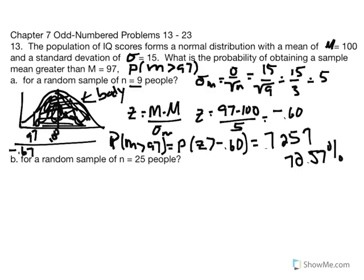Similarly, the next one is for a sample equal to 25. The probability statement is the same: probability of obtaining a sample mean greater than 97, but the sample size has changed. We should consider the effects of that increase in sample size on the z-score. As n increases, standard error decreases and z-score increases. Let's see if mathematically that proves to be true.